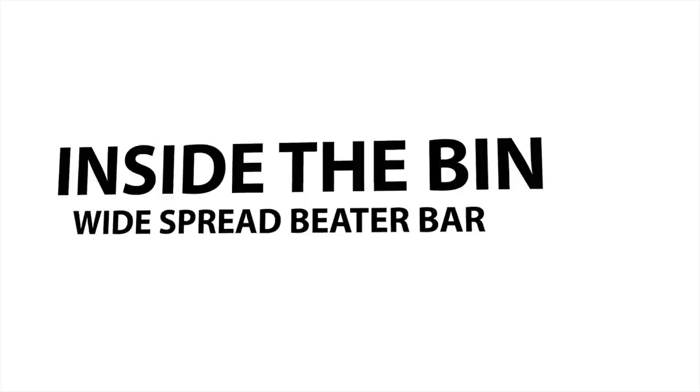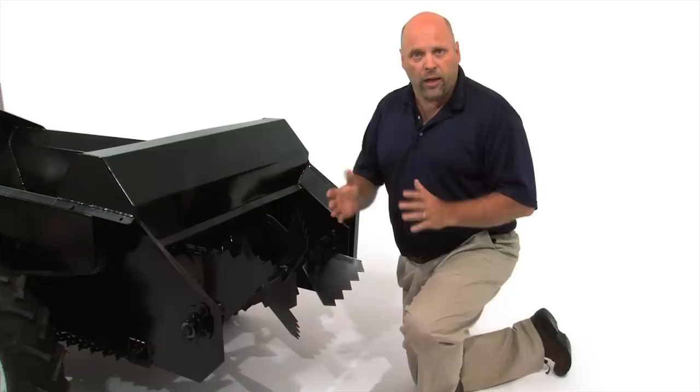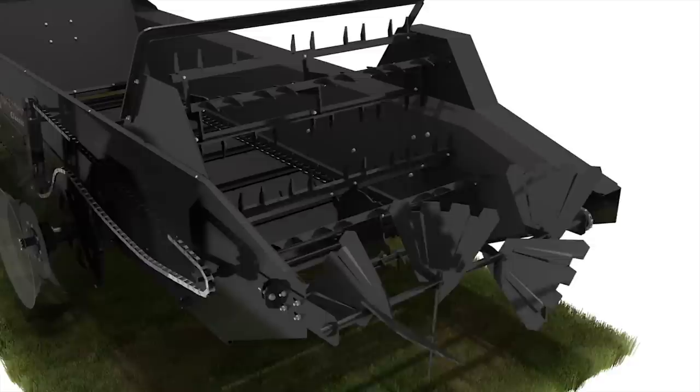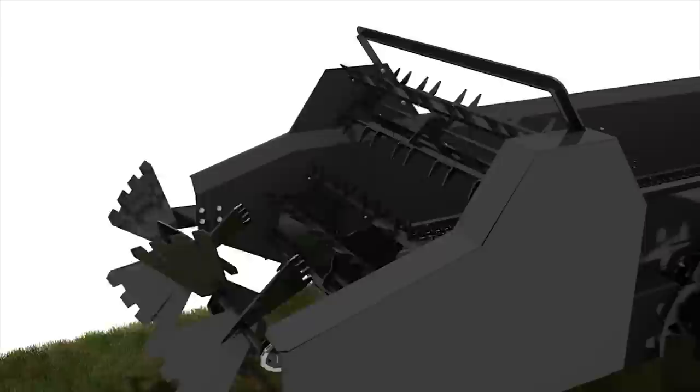After the manure has passed through our shredder bar it's distributed onto the pasture with our spreader or beater bar. This beater bar has widespread paddles that are specifically designed to evenly distribute the material onto the pasture to optimize the spreading and even distribution of the manure.